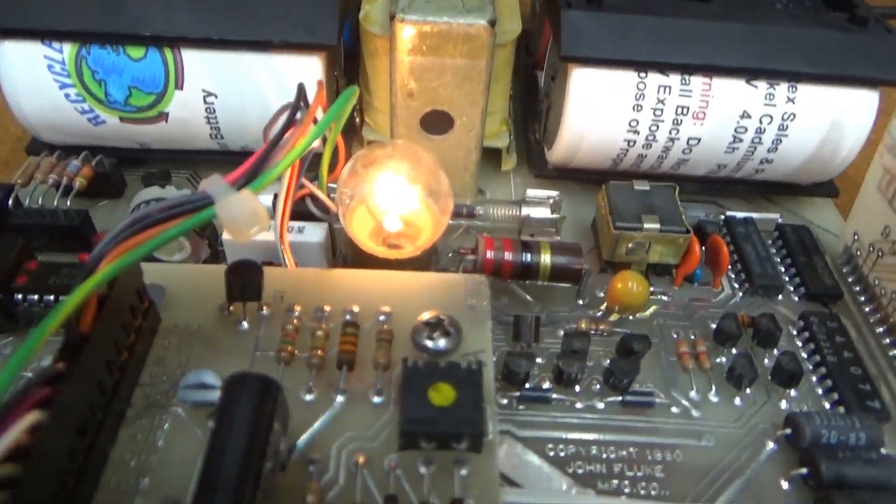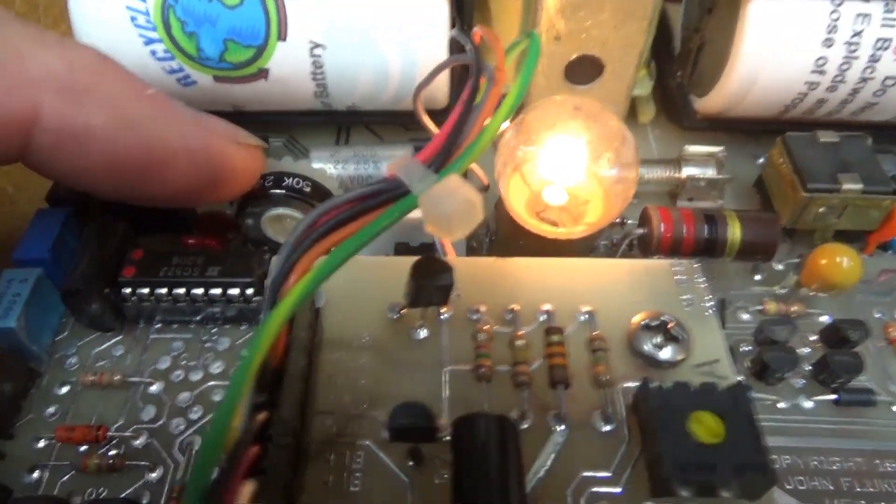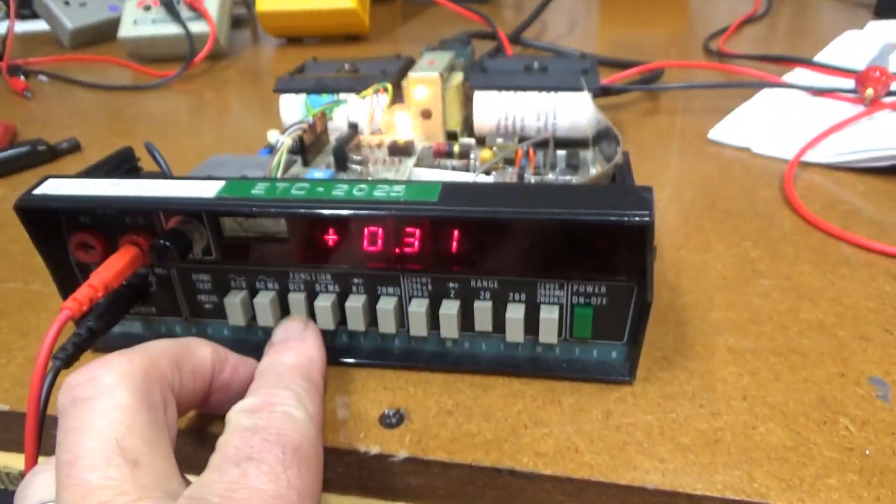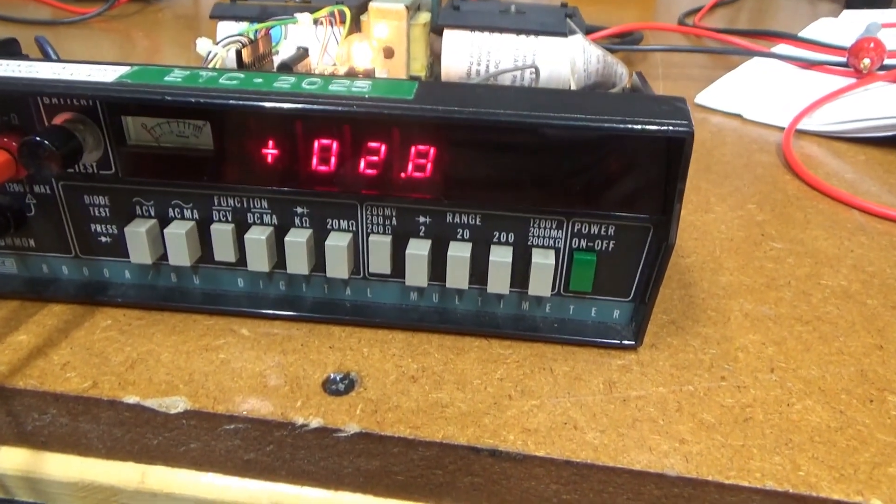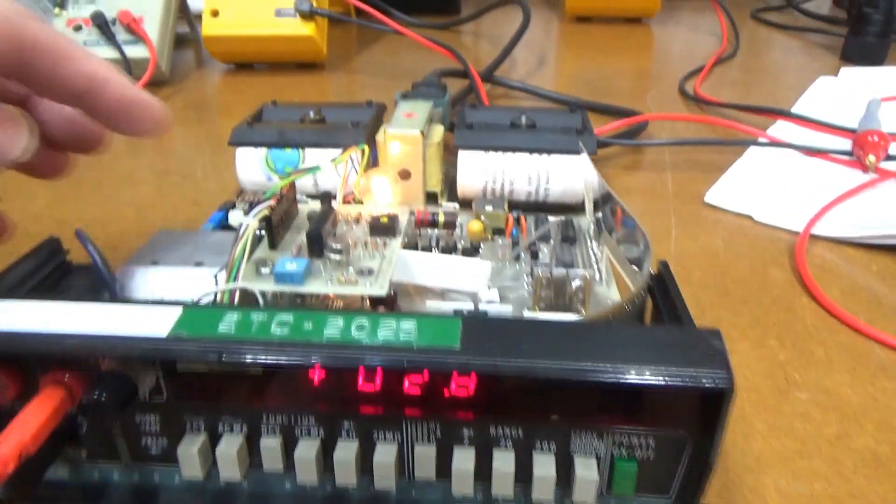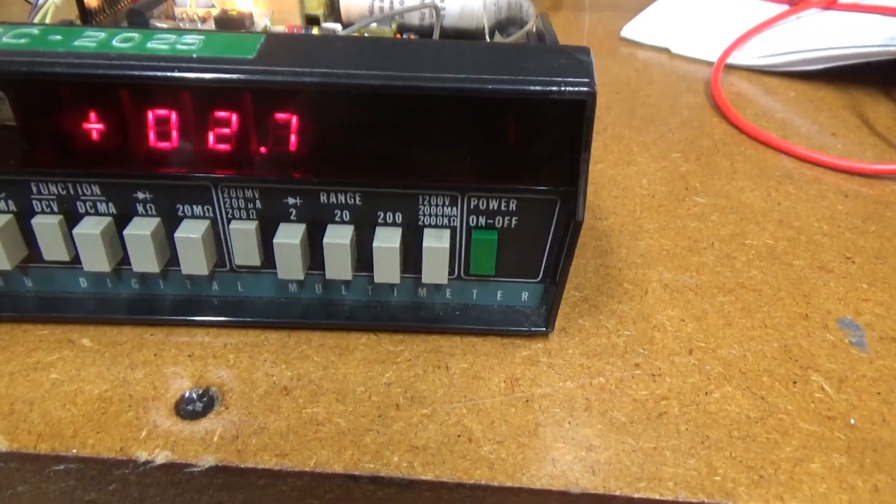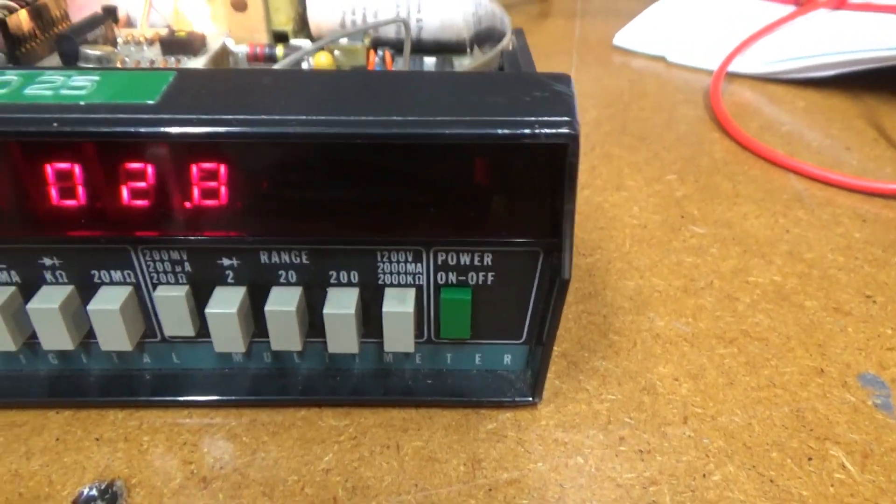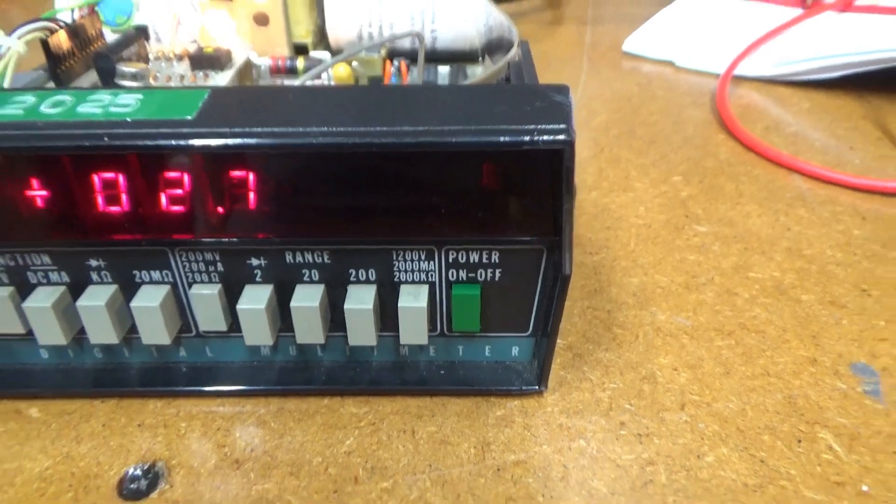You're supposed to be able to adjust this pot right here. Where's my finger? There it is. And zero that out. You're supposed to put it on DC volts, and that range, 200 milliamp range. And you should be able to adjust this pot to get a zero display. And as I adjust it, you get no change. So there's something, something goofy in there.